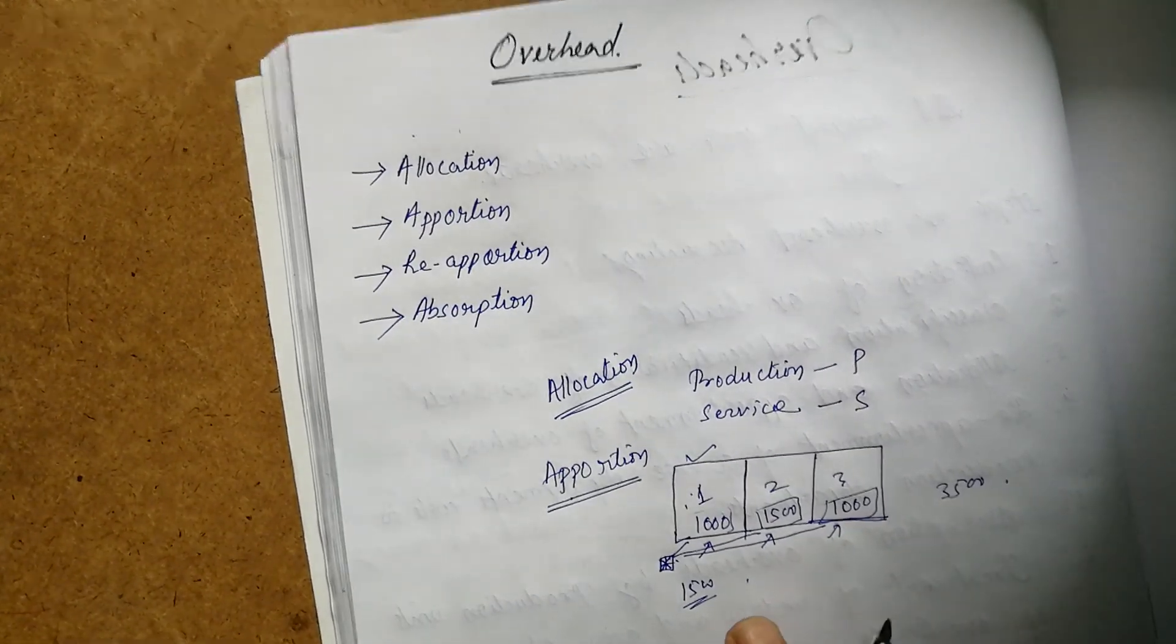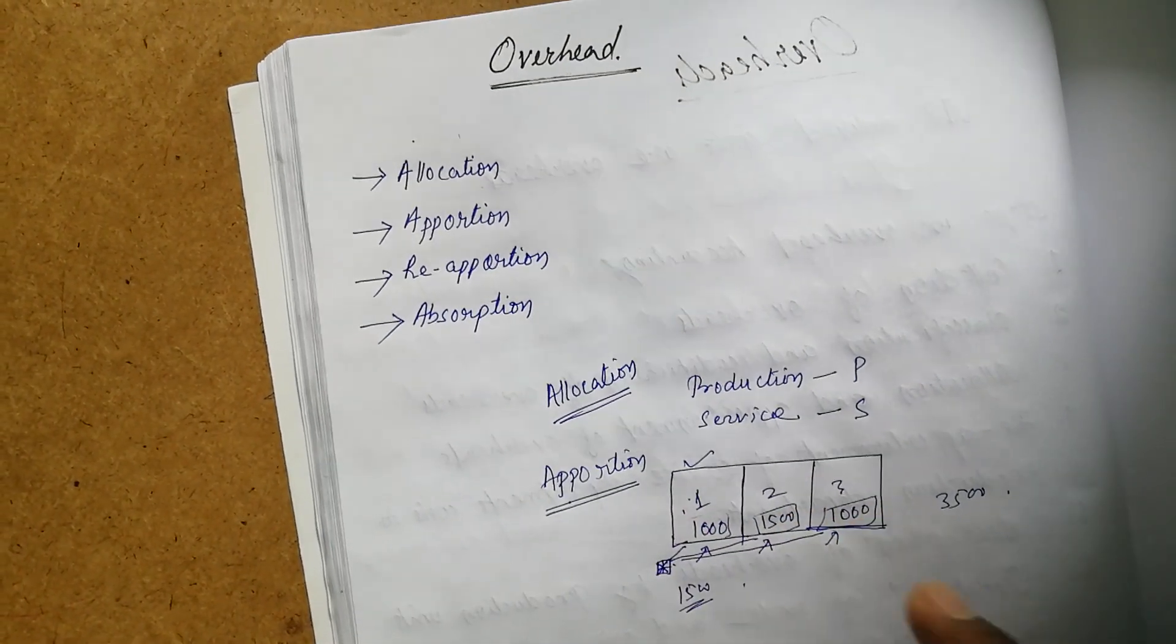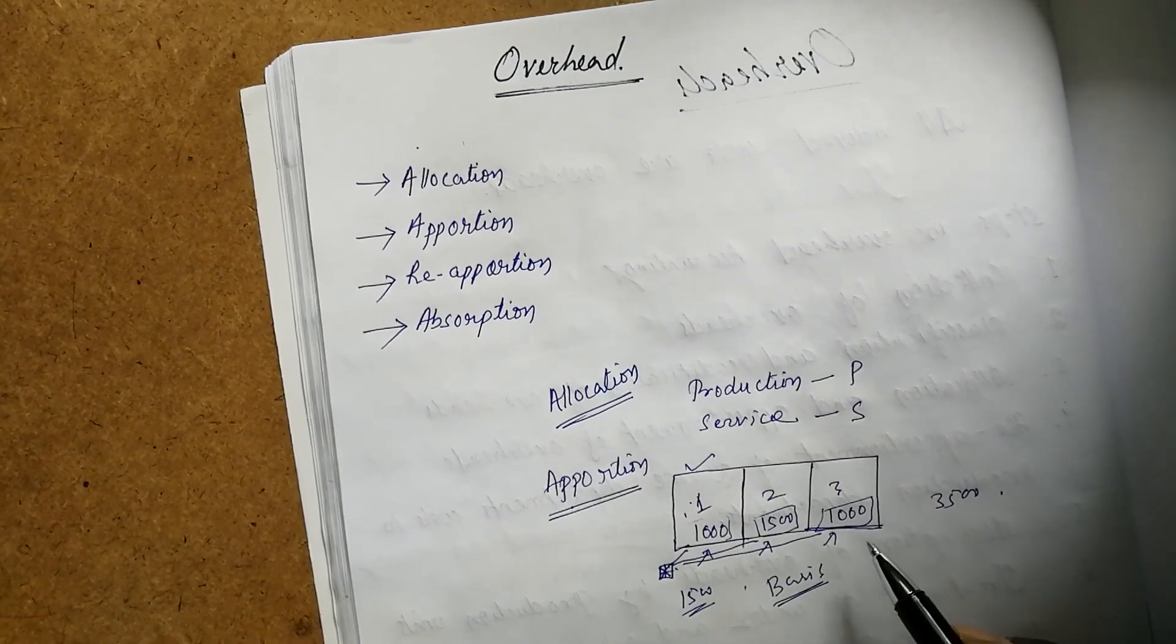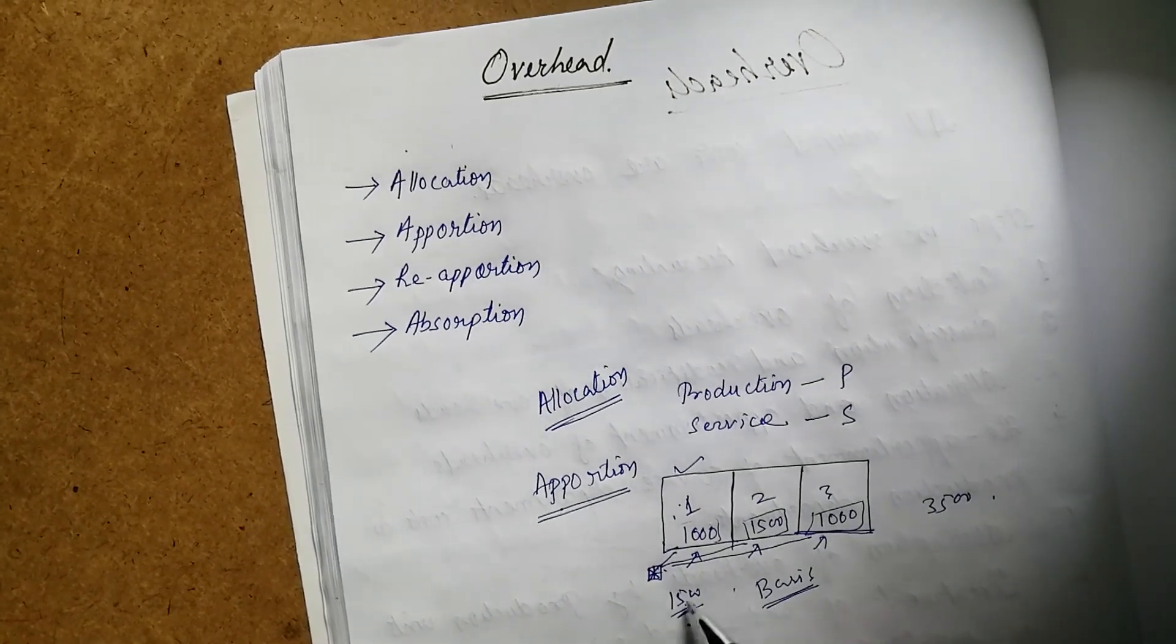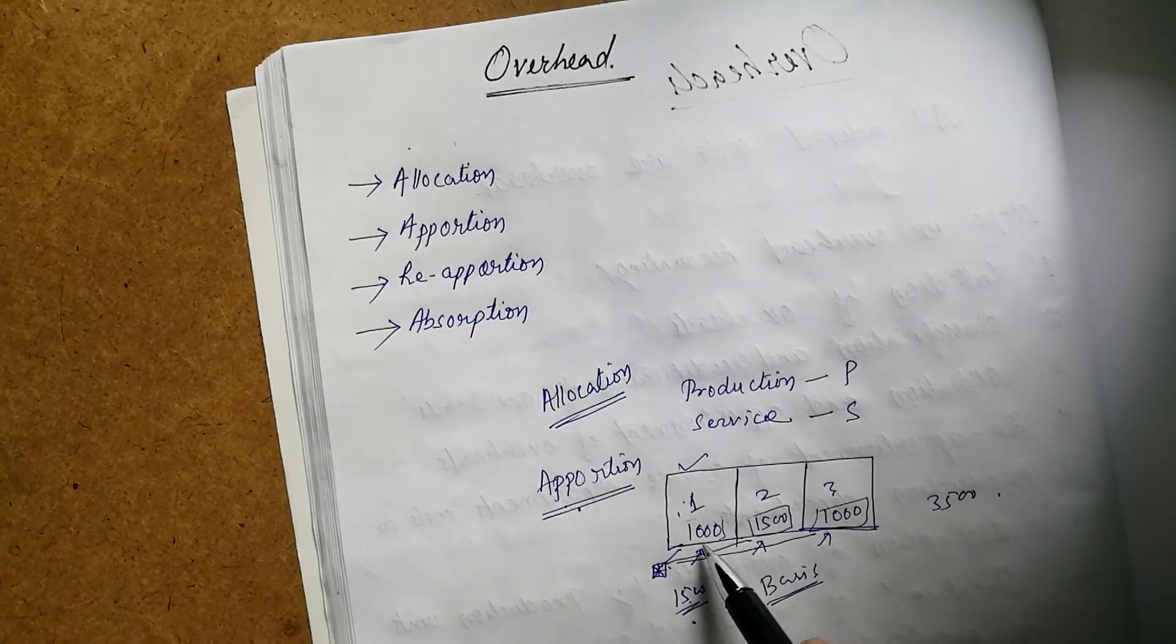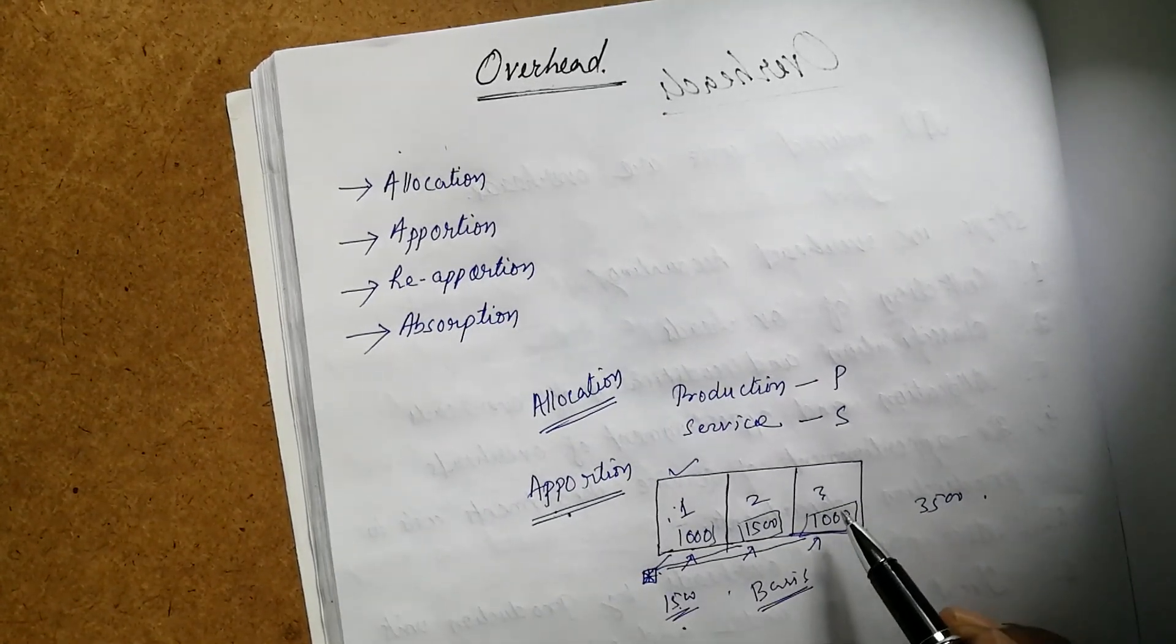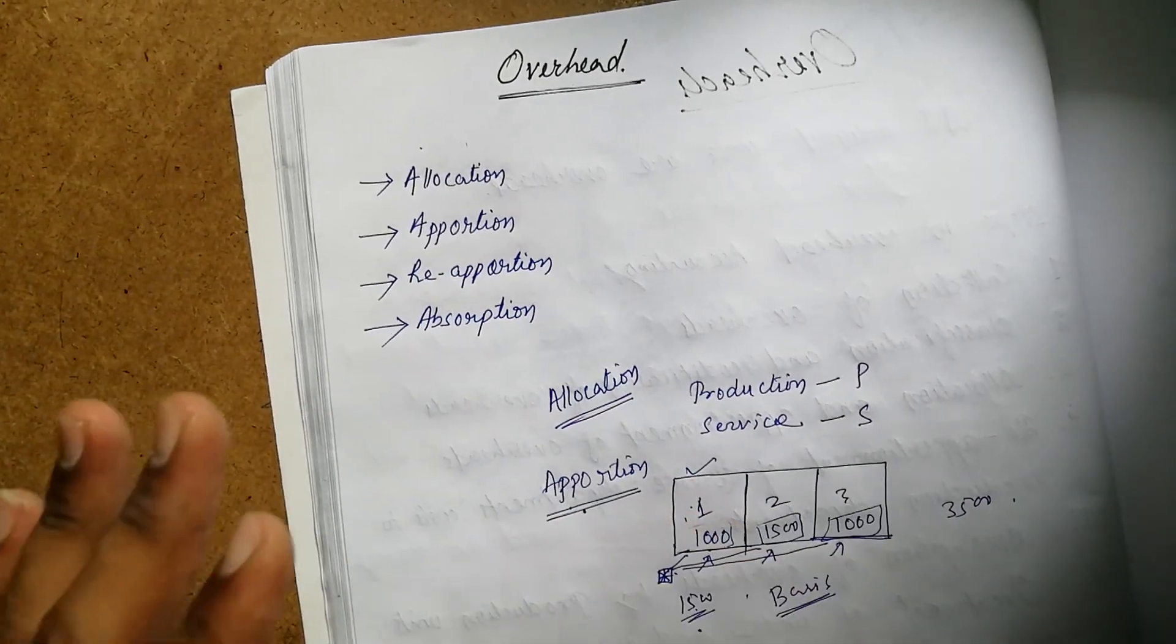Shop 2 gets 1,500. We know exactly how much rent we are paying for each shop. So allocation means putting their expenses in their account directly, because we know shop-wise how much rent we're paying.